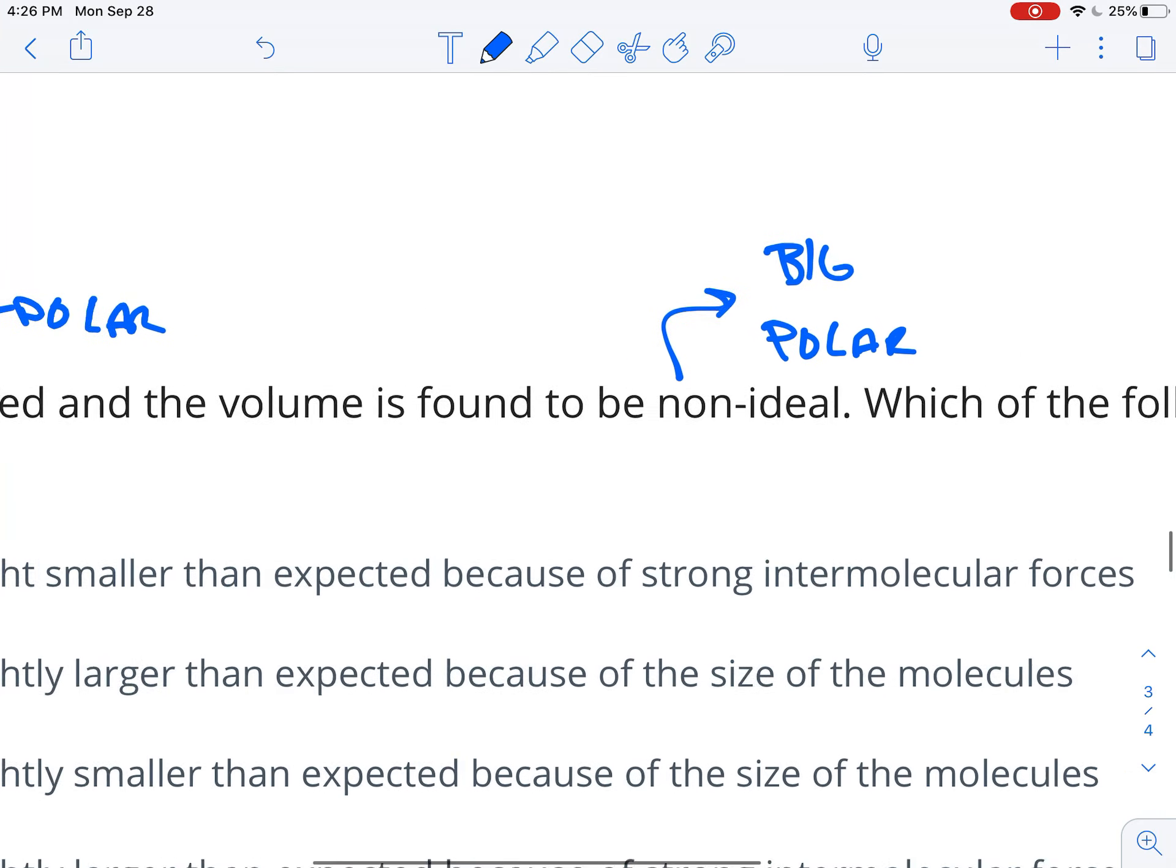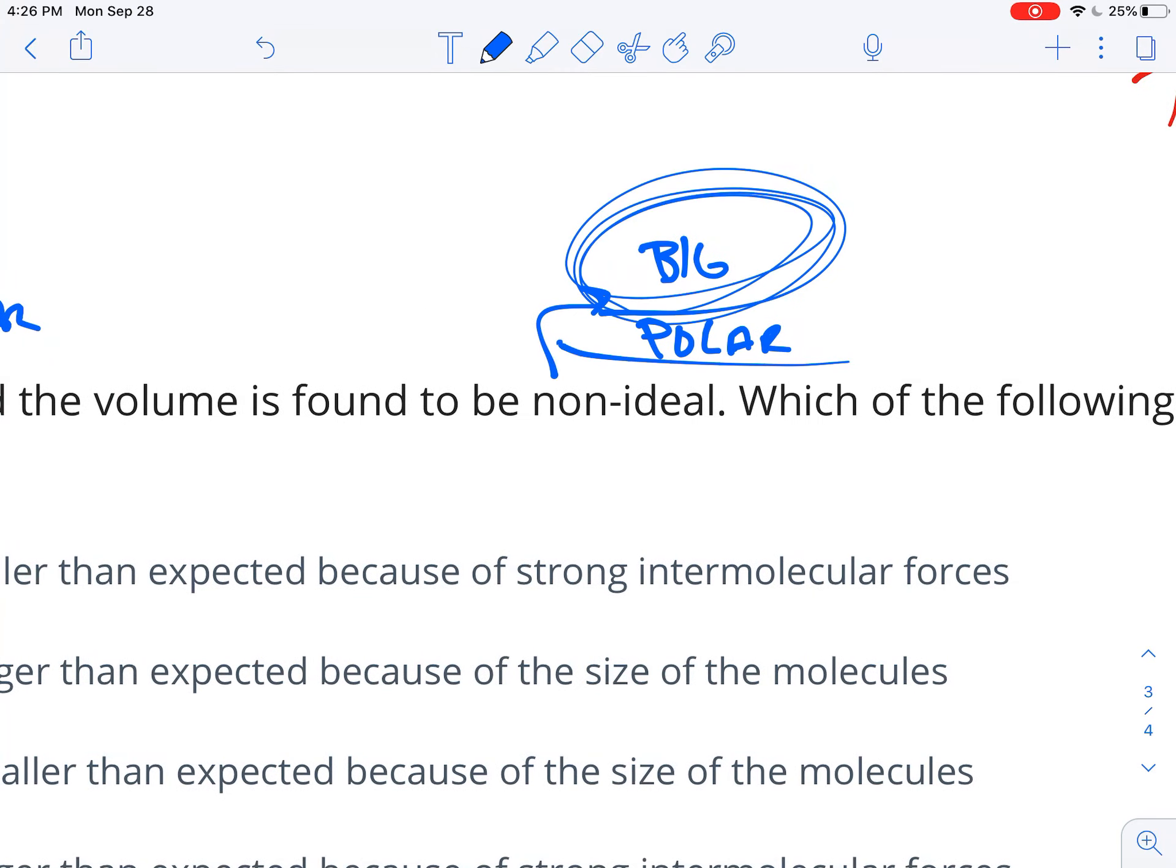So if it's going to be non-polar, then it's probably non-ideal because of its size. And again, C6H14 is a fairly large molecule, so we're looking at a size-related one.